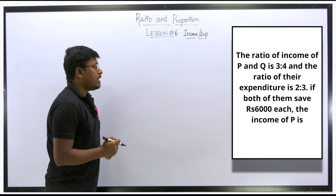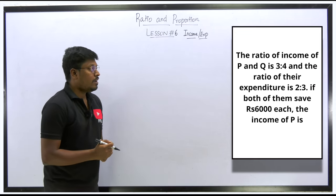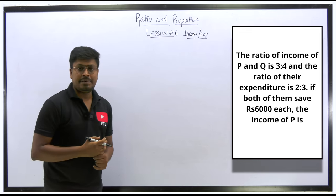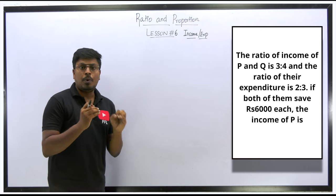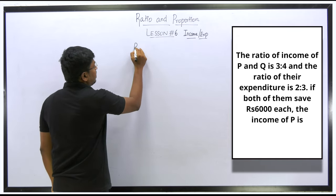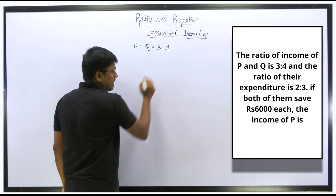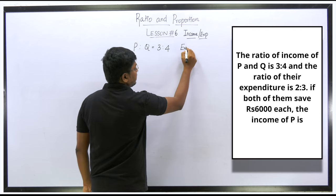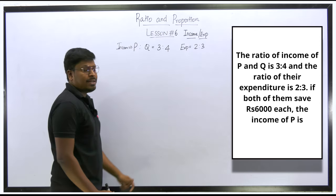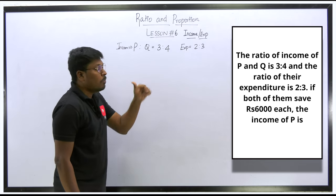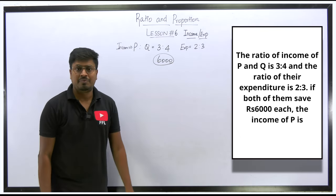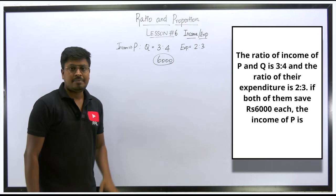Question 1: The ratio of income of P and Q is 3:4, and the ratio of their expenditure is 2:3. If both save ₹6,000 each, find the income of P. The target is to find the income of person P. Income ratio is 3:4, expenditure ratio is 2:3, and both persons save ₹6,000 each.